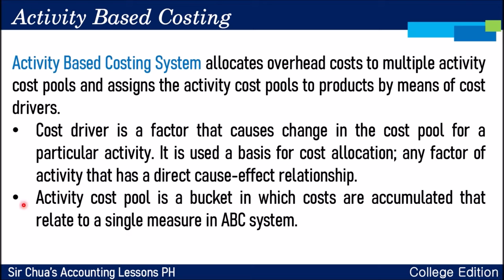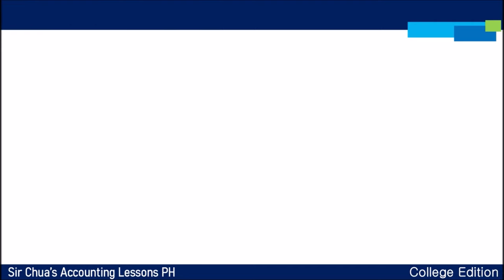A cost pool is a bucket in which costs are accumulated that relate to a single measure in the ABC system. Imagine a swimming pool — a swimming pool collects all the water. Similarly, in Activity-Based Costing, a cost pool collects all the cost of a product before it is allocated. That is why it is called an activity cost pool.